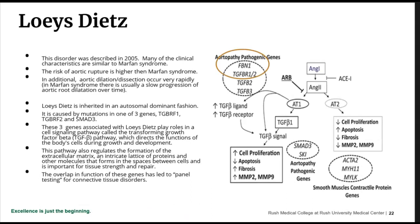The next disorder is Loeys-Dietz syndrome. When I first started in genetics, 80% of patients with Marfan syndrome had a fibrillin mutation — I now say 95%, and I think those other 15% actually had Loeys-Dietz. Loeys-Dietz wasn't even described until 2005, and many features look very similar to Marfan syndrome, but the risk of aortic rupture or dissection is higher. In addition, aortic dissection can be very rapid — they can have a normal echo and then dissect a month later — whereas with Marfan syndrome it's usually a slow process leading to an elective procedure. Loeys-Dietz is inherited in autosomal dominant fashion and is caused by a mutation in one of three genes: TGF-BR1, TGF-BR2, and SMAD3.